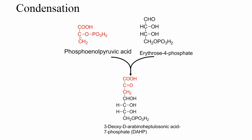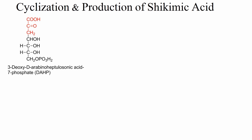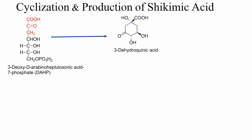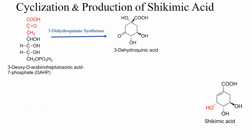This condensation occurs in the presence of an enzyme called DAHP synthetase. Now coming to cyclization and production of Shikimic Acid. DAHP undergoes a cyclization reaction to form 3-dehydroquinic acid. The cyclization occurs in the presence of an enzyme called 3-dehydroquinate synthetase. The production of Shikimic Acid from 3-dehydroquinic acid occurs in two steps.